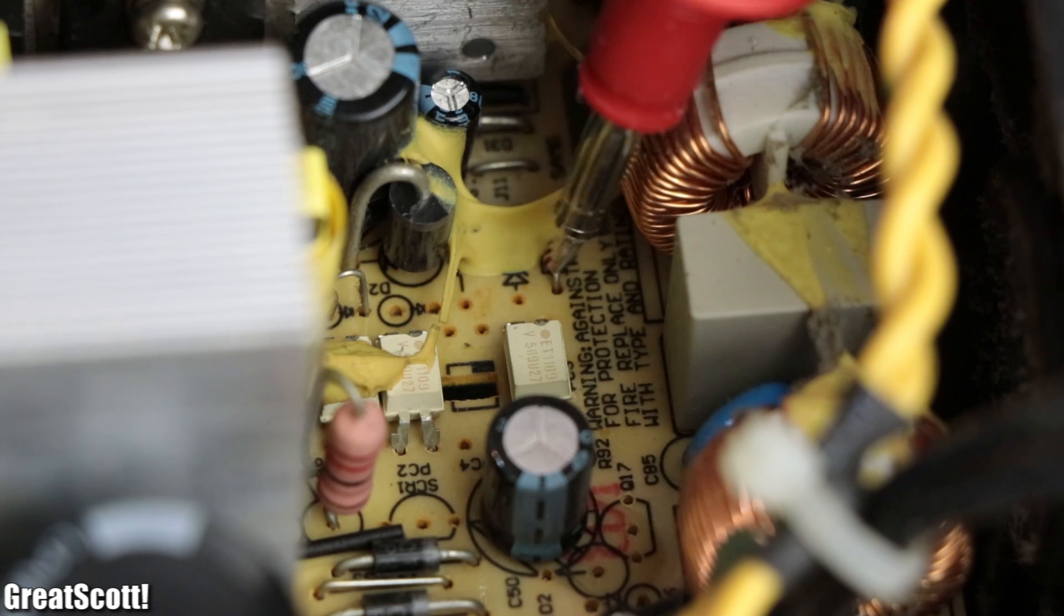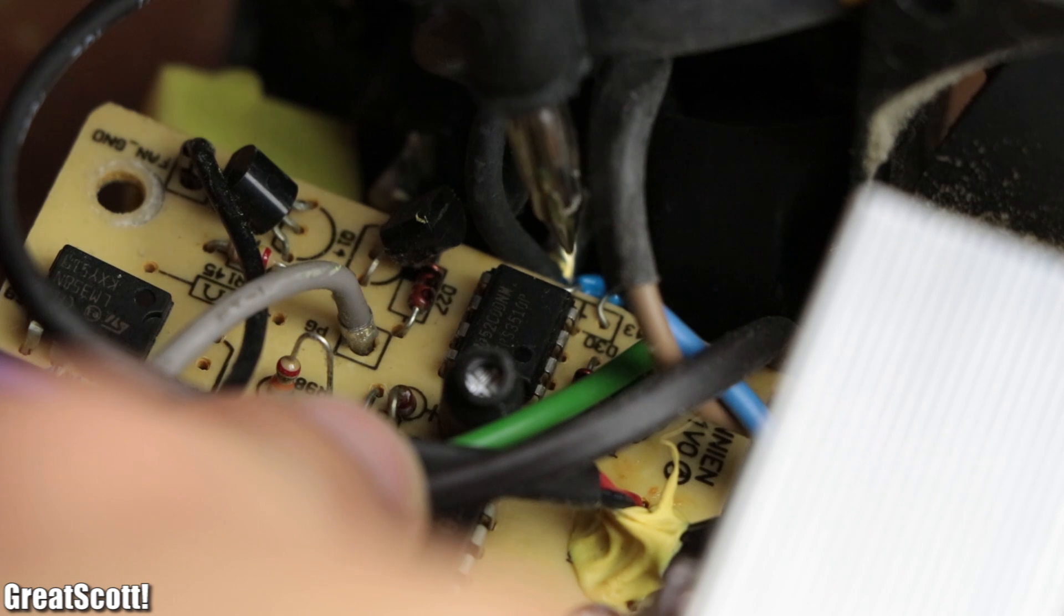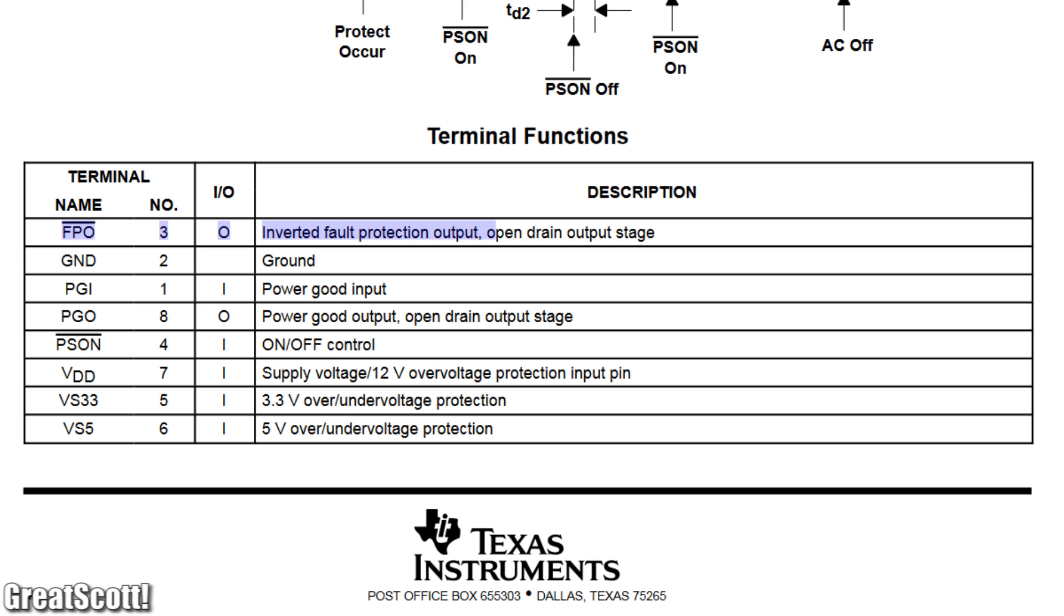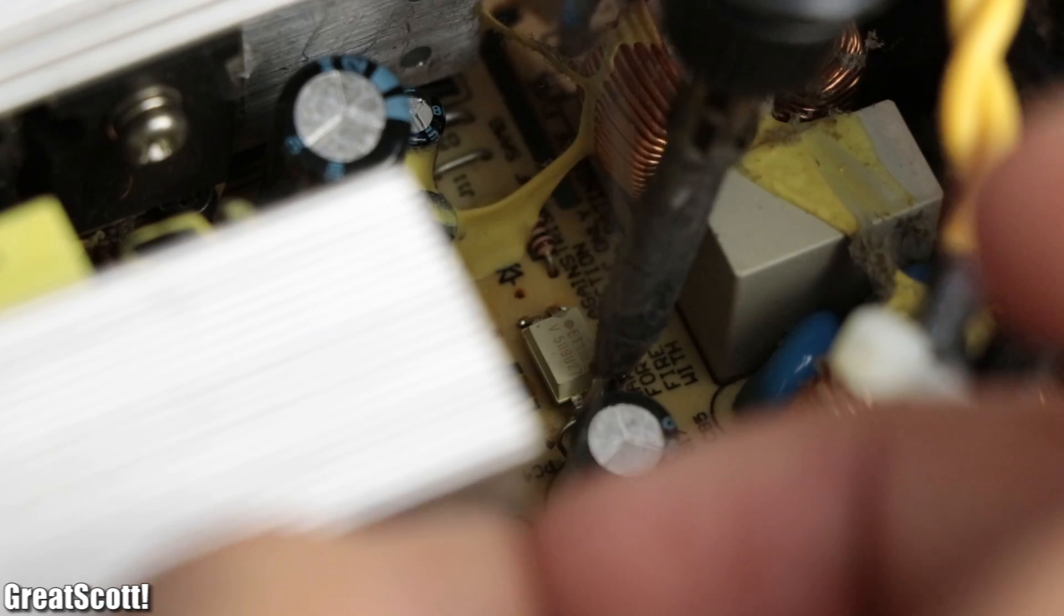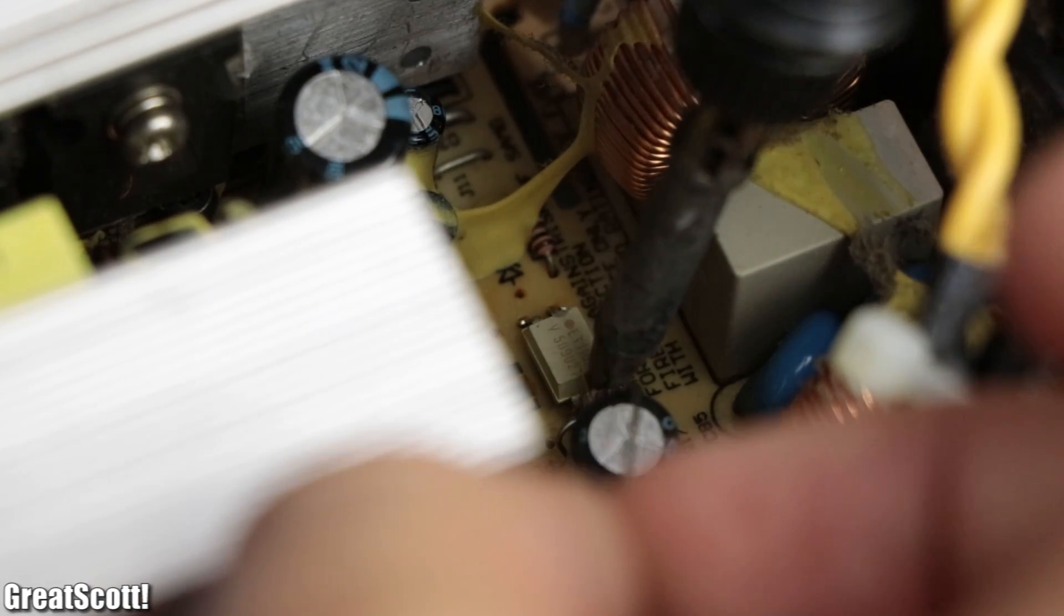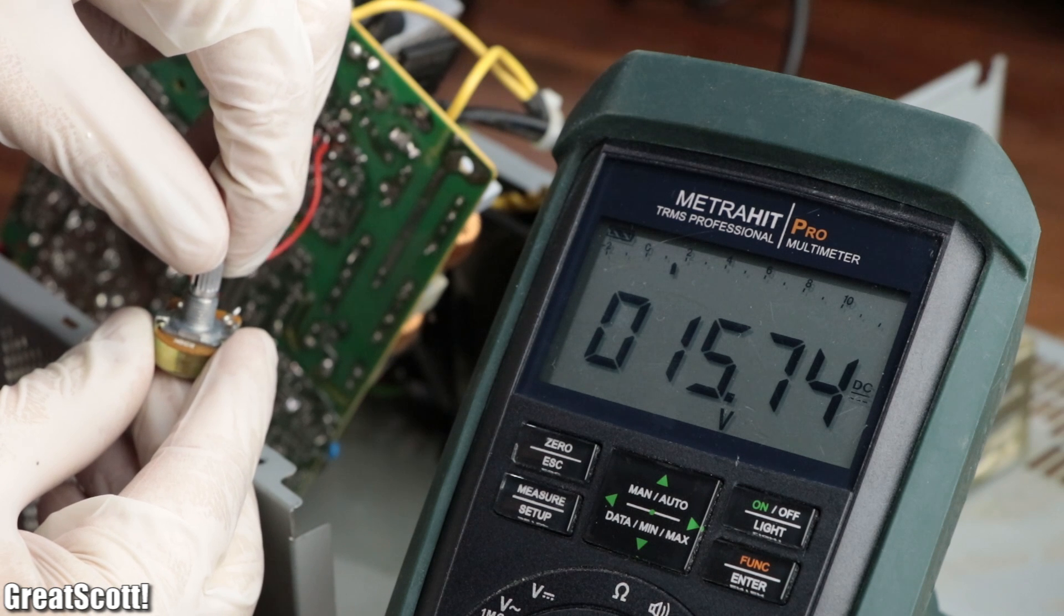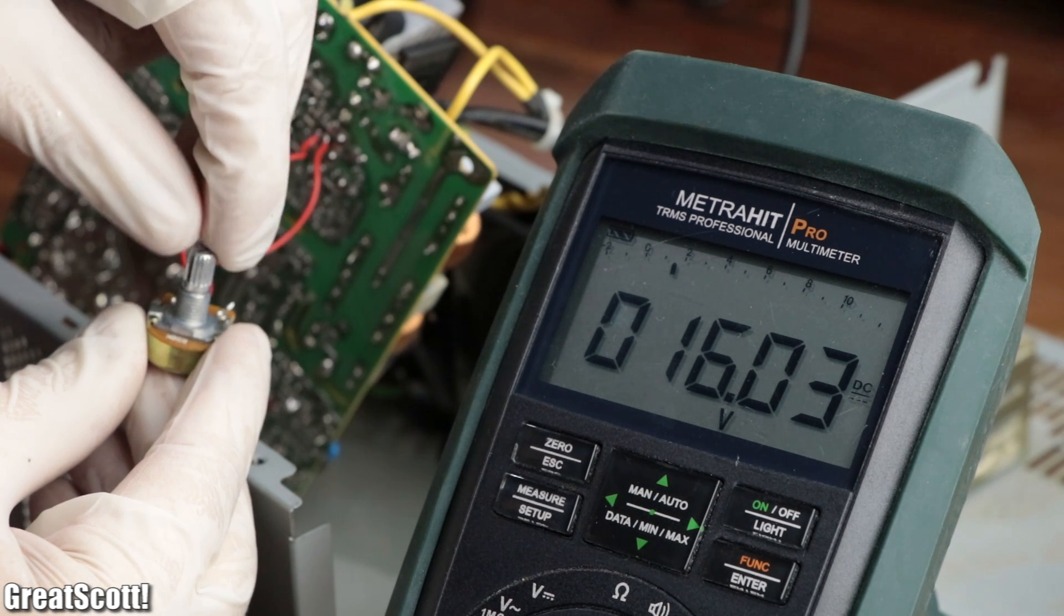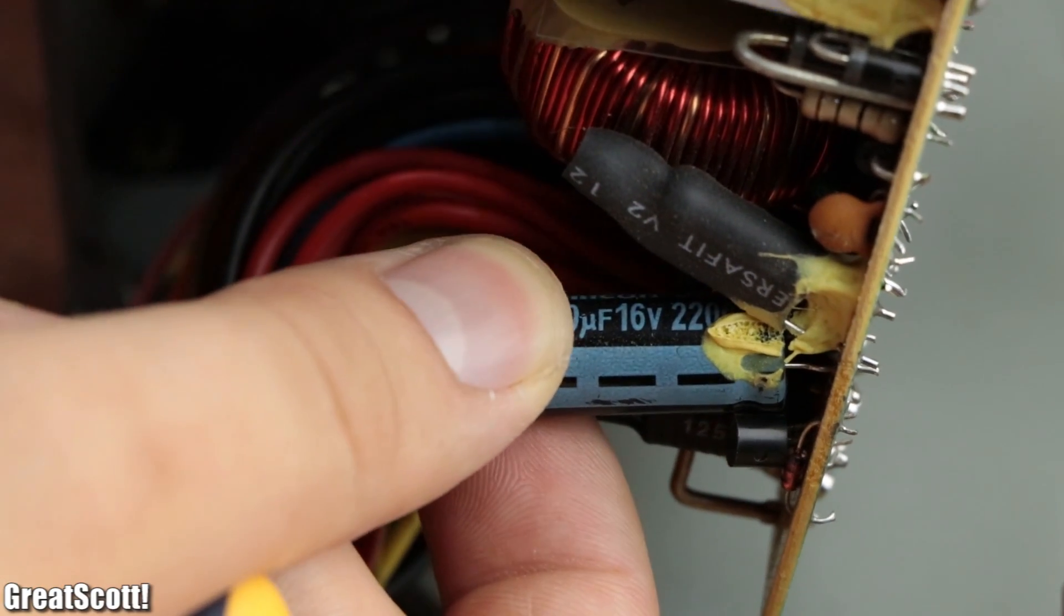Luckily though, another optocoupler, close to the PWM IC, was directly connected to pin 3 of the PC power supply protection IC, which was the full protection output pin, whose job was to trigger the over voltage protection. To get rid of this protection feature, I simply shorted two pins of the optocoupler, which resulted in a successful voltage adjustment up to 16 volts, which was the maximum, since the output capacitors were only rated for up to this voltage.